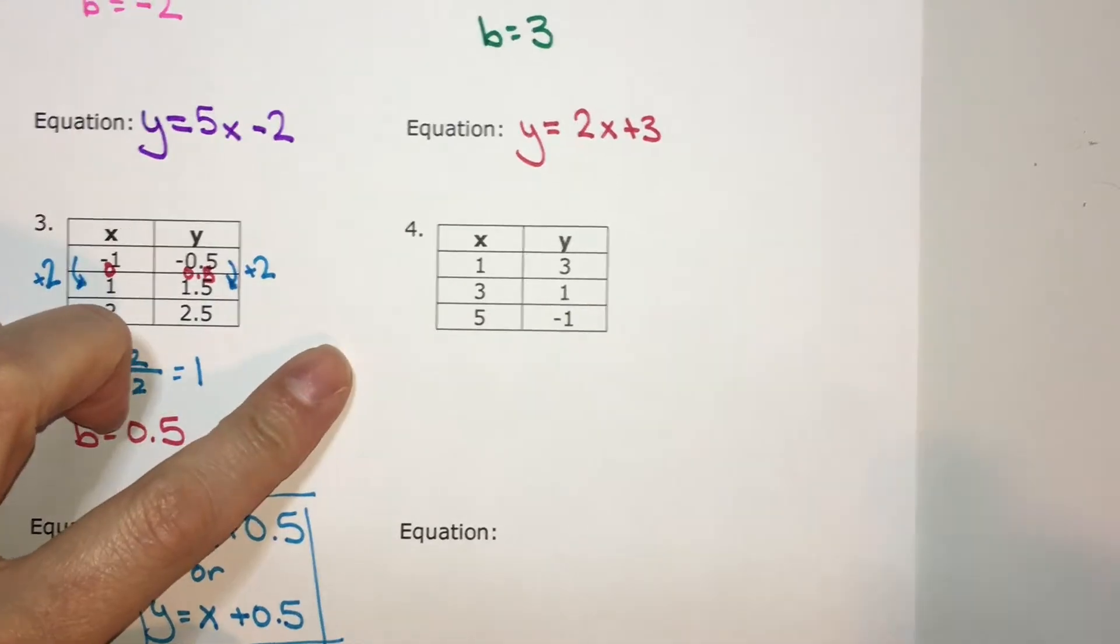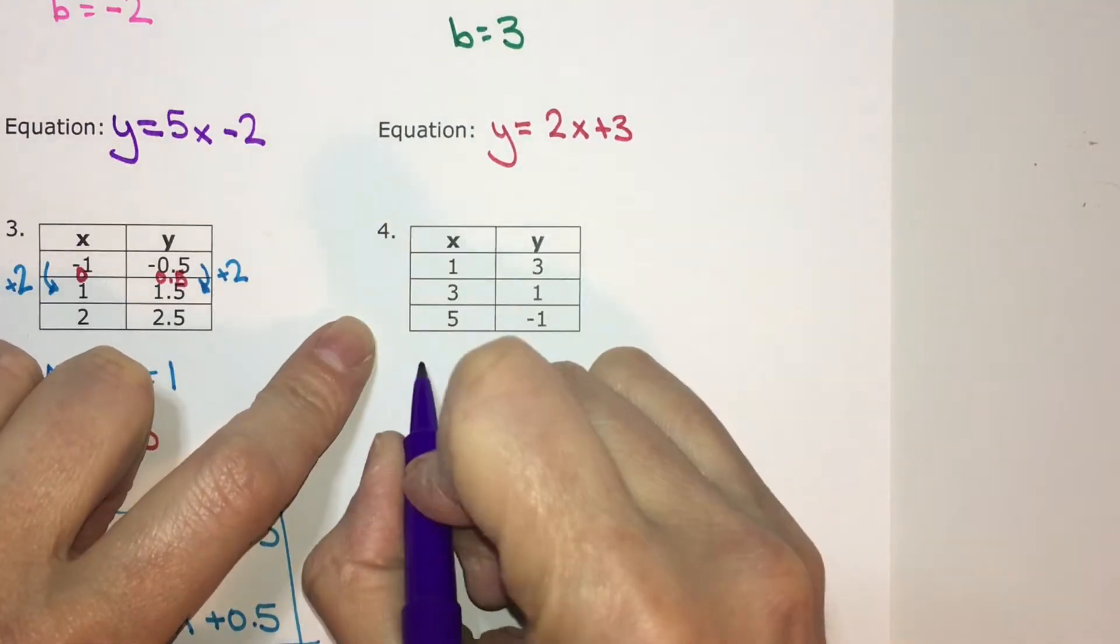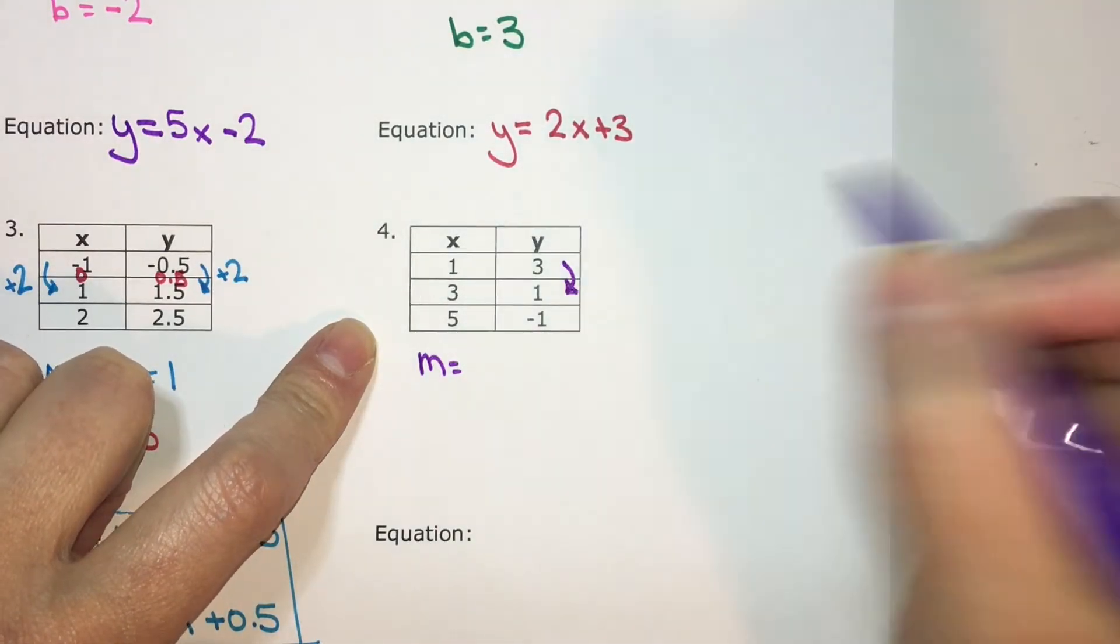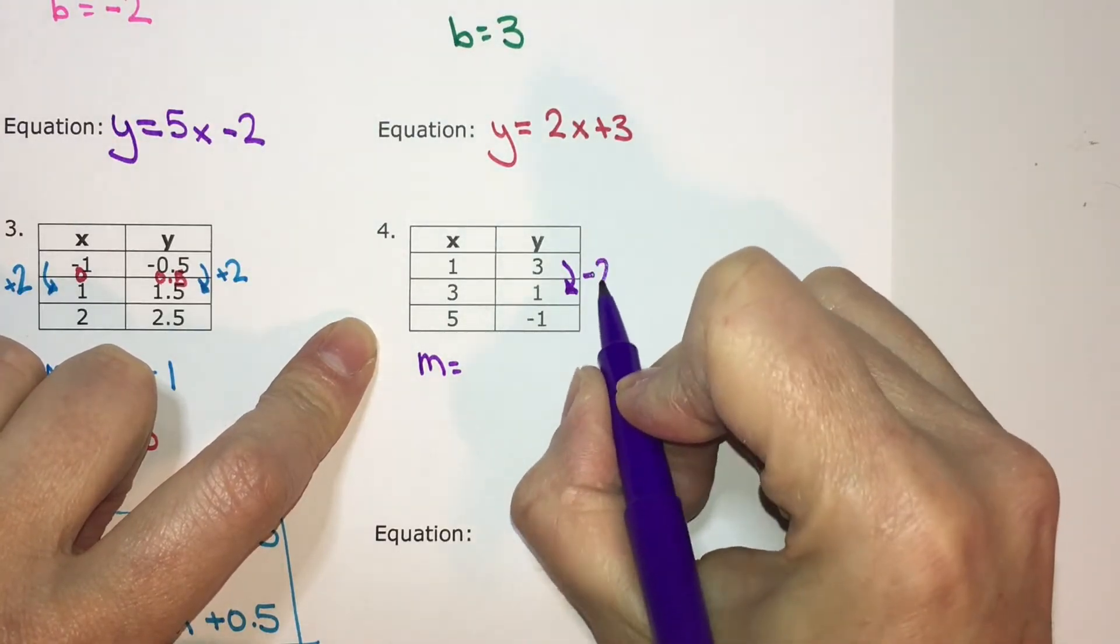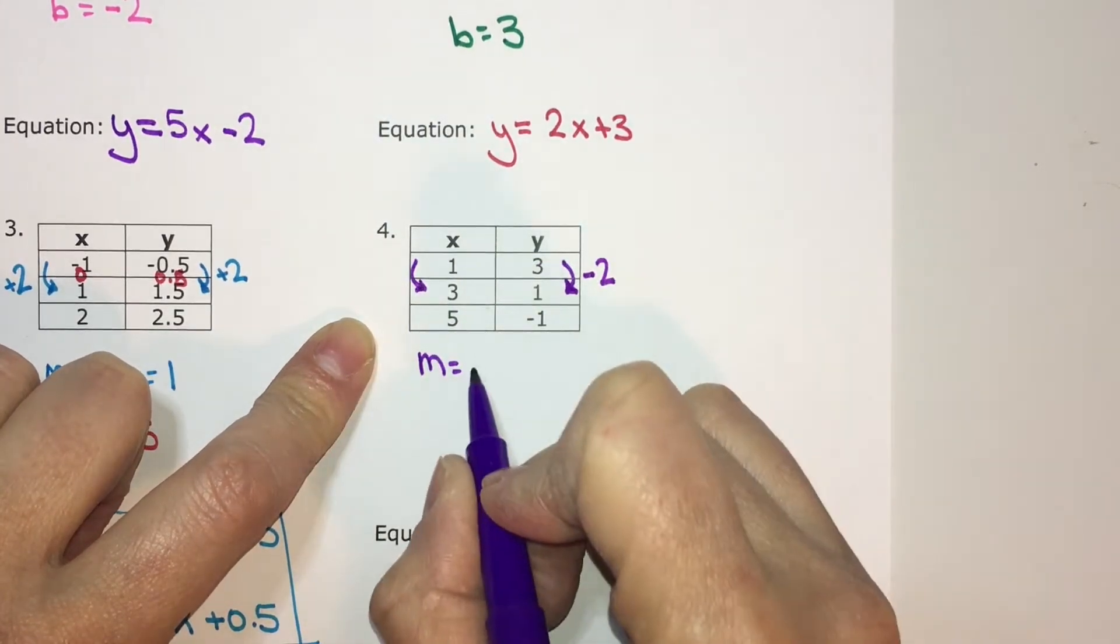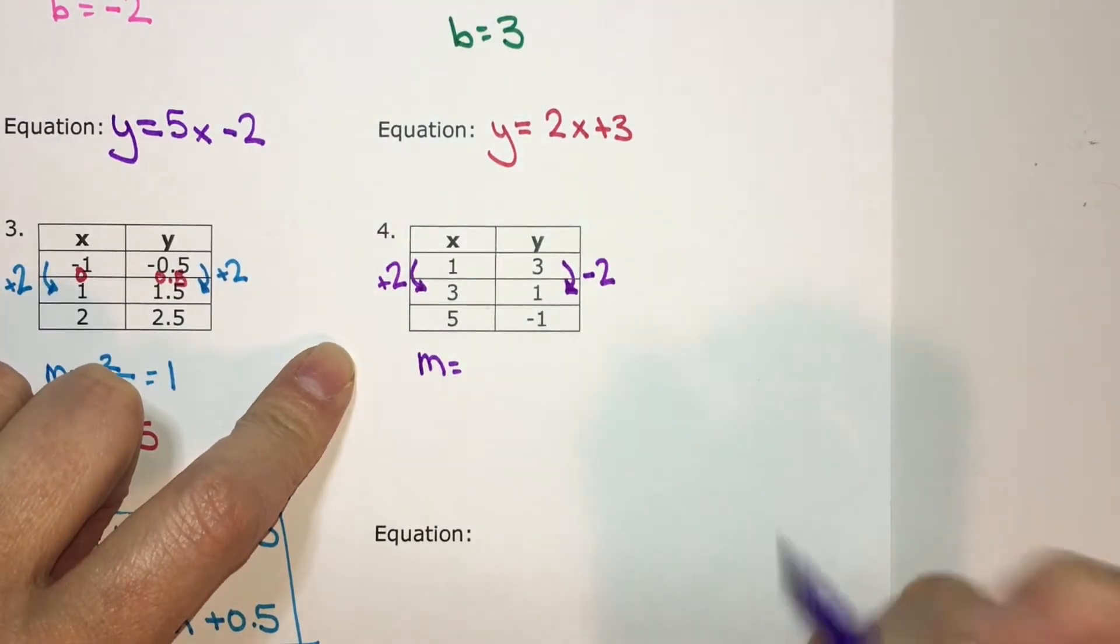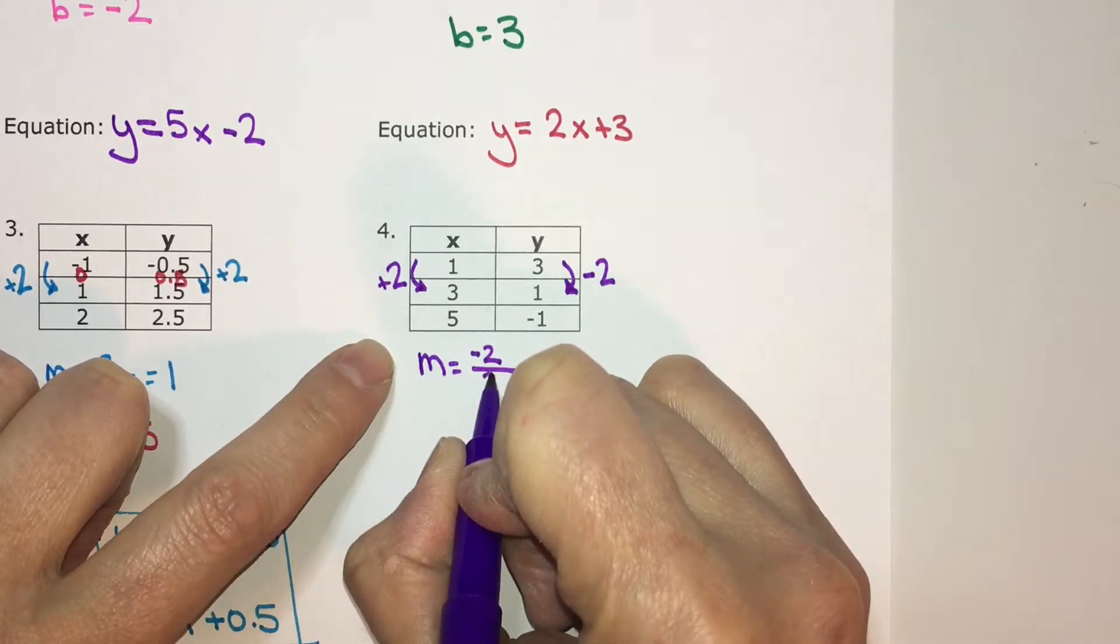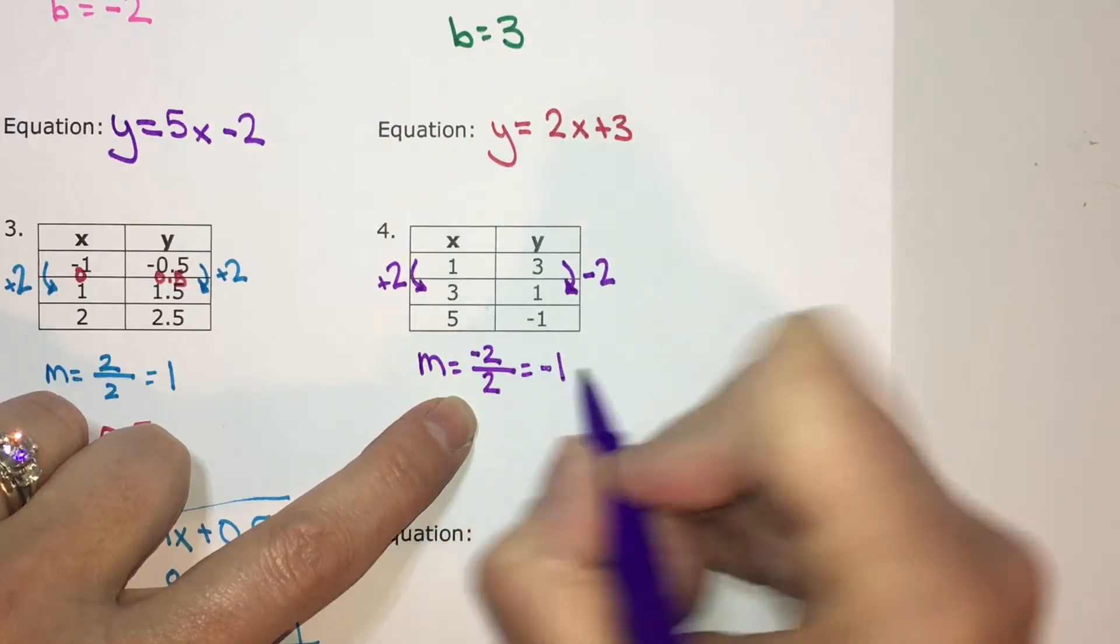This one's a little more tricky, but it's not too bad. Start by finding that rate of change. Change in y. To go from 3 to 1, we're decreasing, so it's subtracting 2. And change in x. To go from 1 to 3, you're increasing, so you're adding 2. Change in y, negative 2 over change in x, positive 2. Negative 2 divided by positive 2 is negative 1.